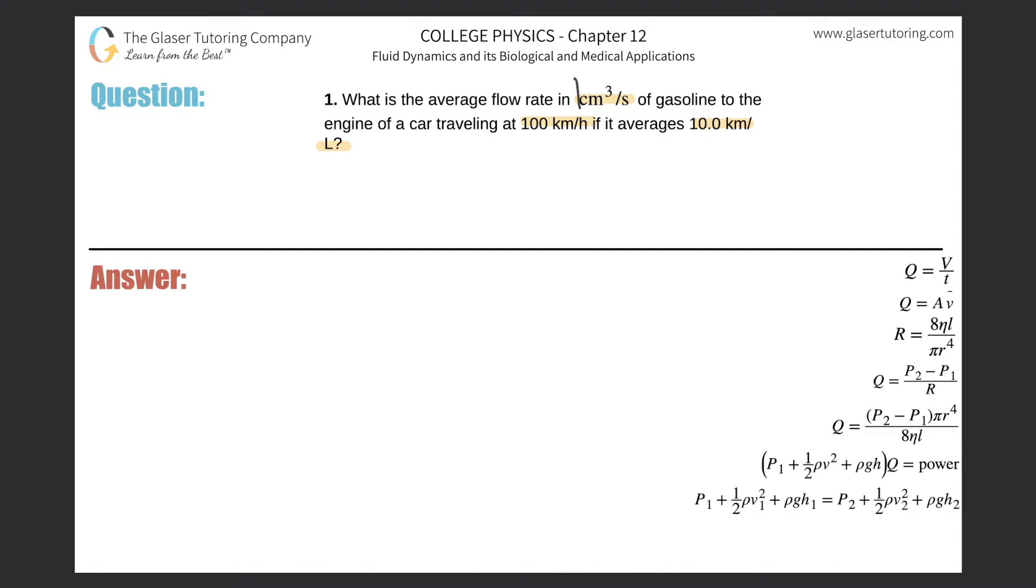Basically focus on the units we want to find. We want to find centimeter cubed per second, so cm³/s. Now think about the nature of this unit—it's a volume, and the denominator is seconds, so it's talking about time.